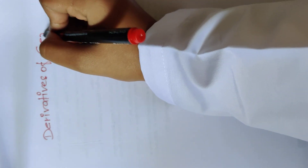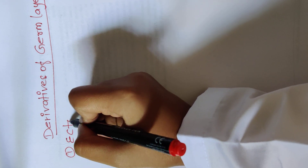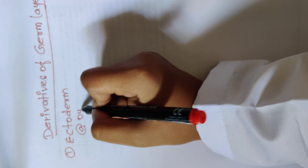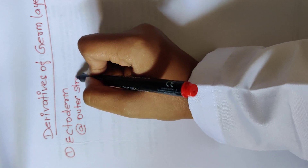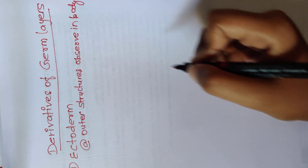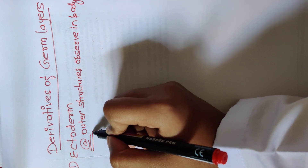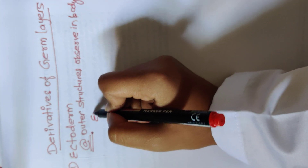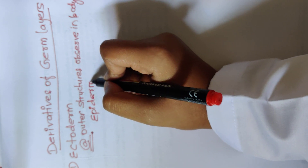Let us talk about derivatives of germ layers. First, it includes ectoderm. For ectoderm, remember that it represents the outer structures observed in the body. Whatever you see from the outside of the body is made up of ectoderm and derived from it. So first, you can write epidermis for the skin.